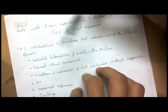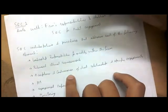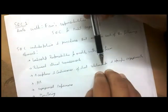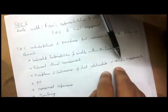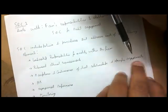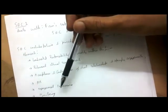The elements of the system of quality control also include whether you should accept a client or not — you may be prohibited from doing so. Other elements include human resources, engagement performance, and monitoring. These are all going to be discussed.